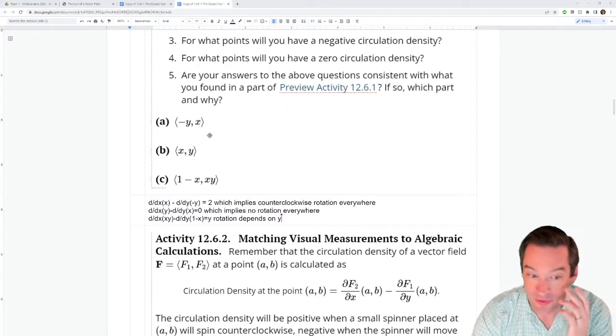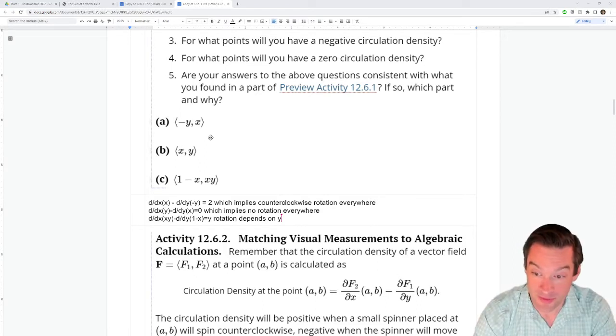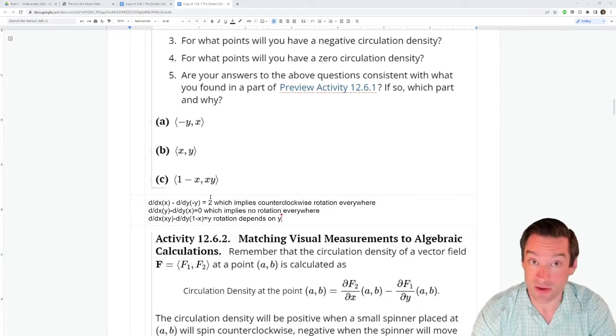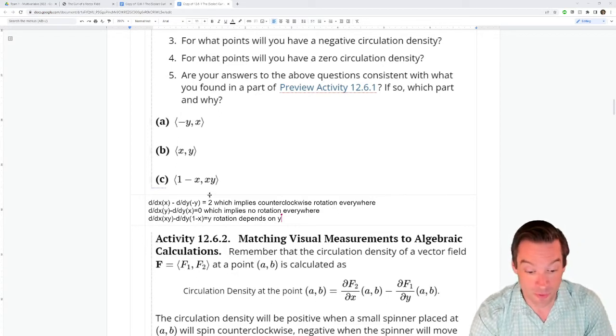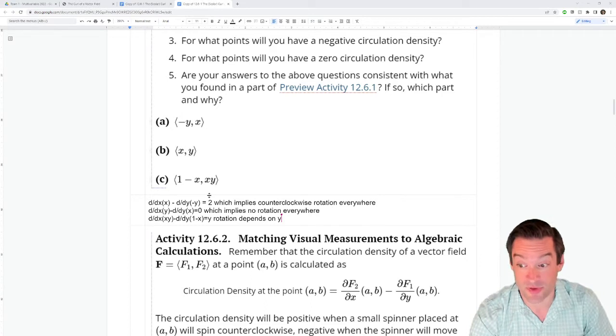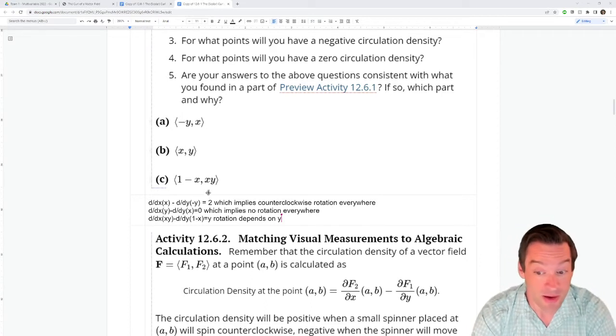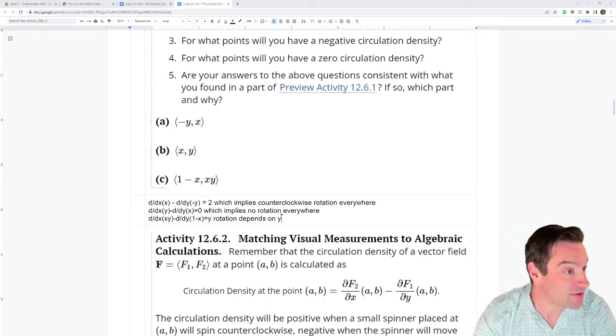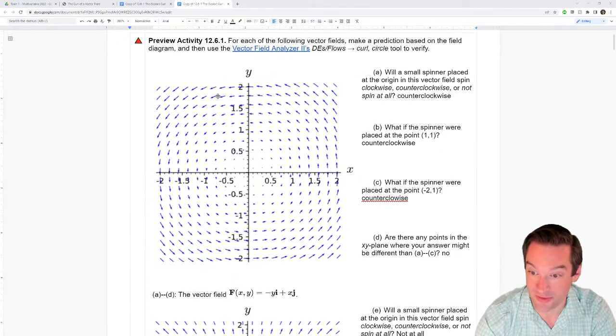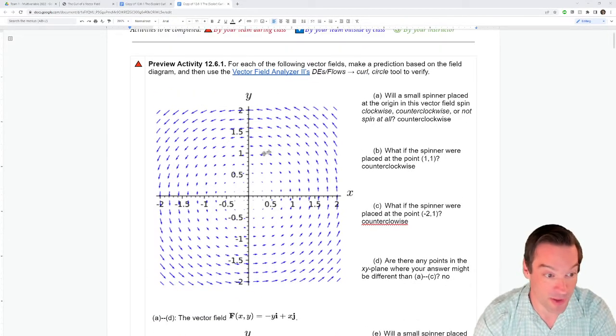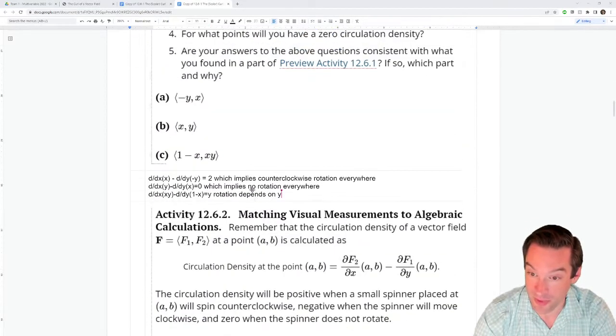So you found out that for the first one of these vector fields, the minus y, x example, that the scalar curl was the number two. And that implies that everywhere, so it doesn't depend on x or y, everywhere in the x, y plane, the rotation, the infinitesimal rotation associated with this vector field is counterclockwise. And that is actually exactly the example that we looked at as the first vector field on the preview activity up here. That was this one that rotates counterclockwise everywhere in the x, y plane.